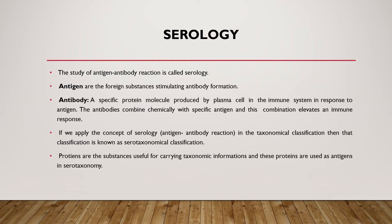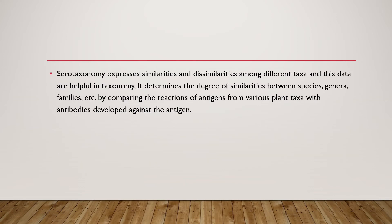When this antibody combines with that antigen to fight against it, it is known as an antigen-antibody reaction. If you apply the concept of serology — that is, antigen-antibody reaction — in taxonomical classification, then this classification is known as serotaxonomical classification. Proteins are substances useful for carrying taxonomic information, and these proteins are used as antigens in serotaxonomic studies. The plant contains a specific protein which acts as the carrier of the plant's taxonomical information.